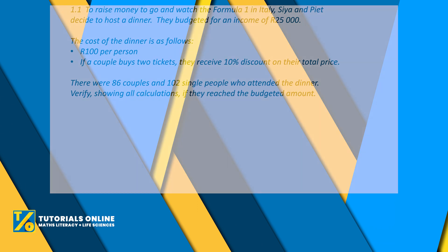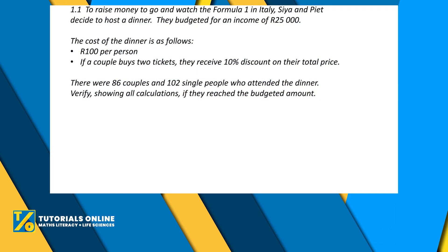This first question says: to raise money to go and watch the Formula One in Italy, Sia and Pitt decide to host a dinner. They budgeted for an income of 25,000 rand. The cost of the dinner is 100 rand per person, and if a couple buys two tickets they receive a 10% discount on their total price. There were 86 couples and 102 single people who attended the dinner. Verify, showing all calculations, if they reached the budgeted amount.